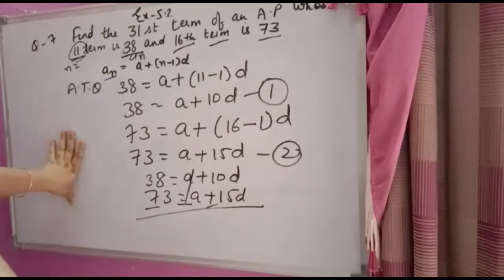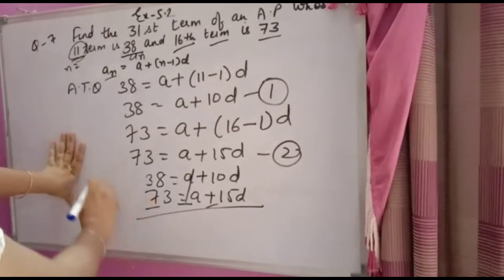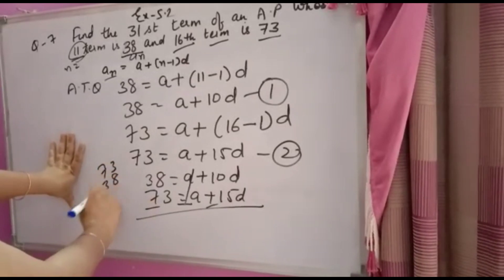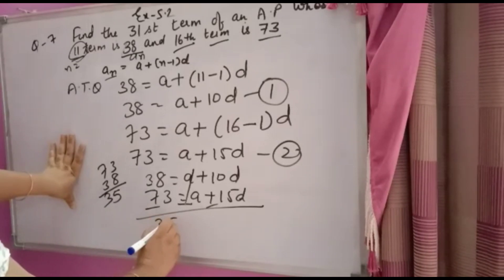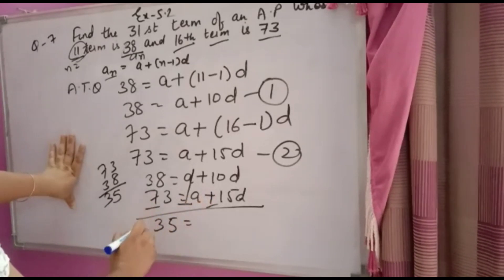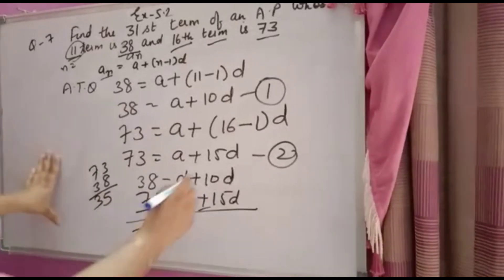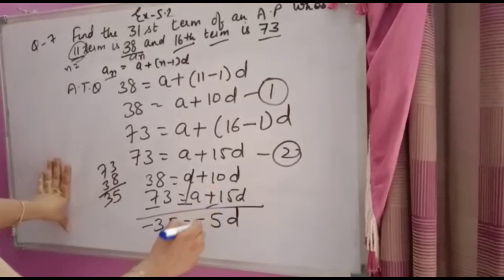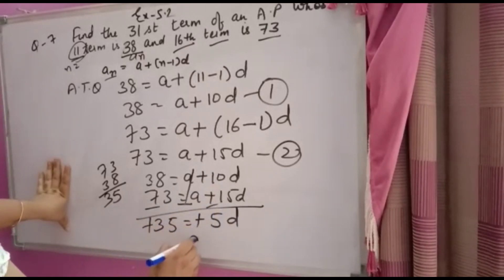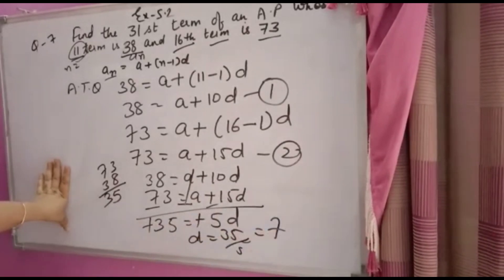73 minus 38 equals 35. For D: 15D minus 10D equals 5D. So 35 = 5D, which gives D = 35/5 = 7. D equals 7.